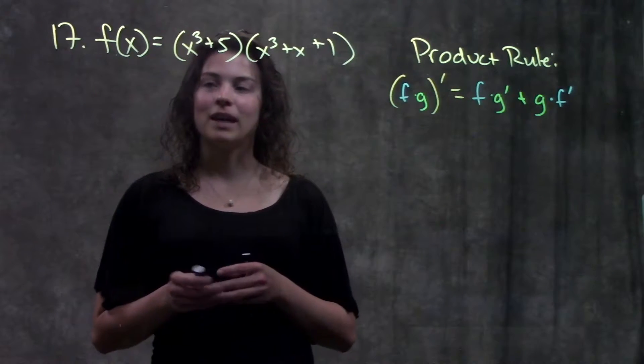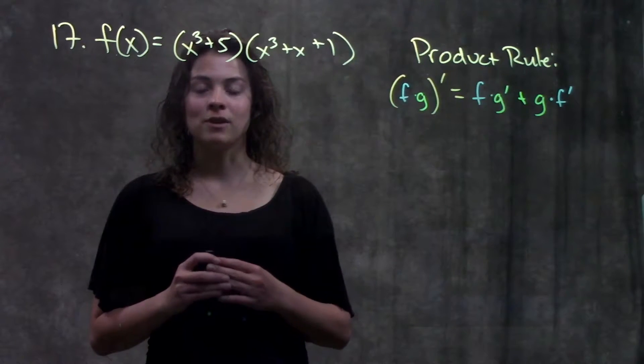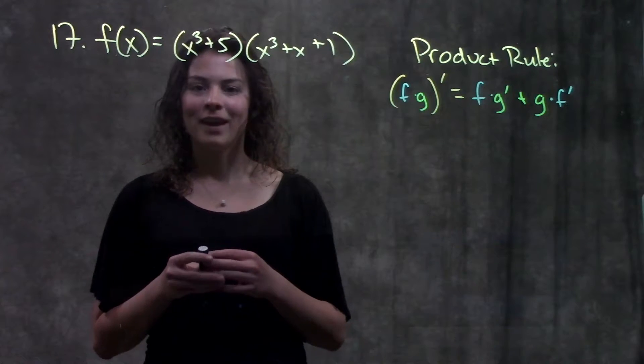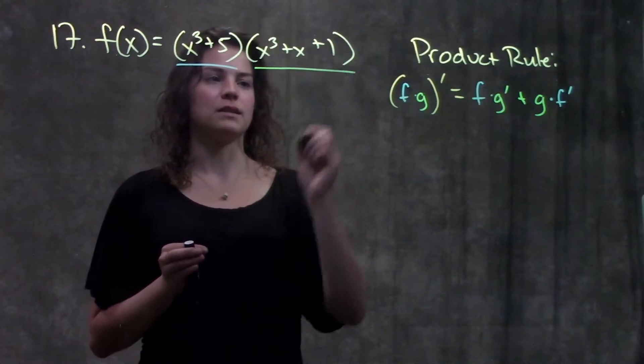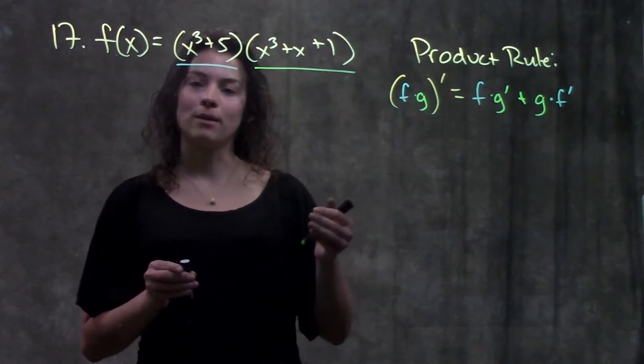This is number 17 in your book. It gives us this function, and it's asking for the derivative of this function. So the first thing I'm going to do is I'm going to label out what my first function is and what my second function is. And from here, I'm just going to follow my rule.